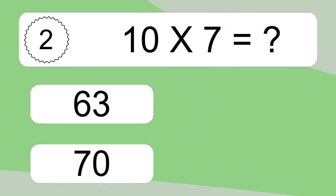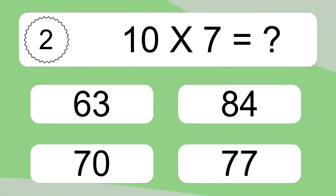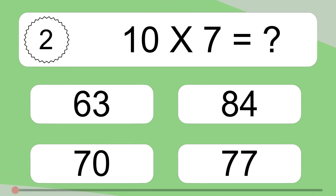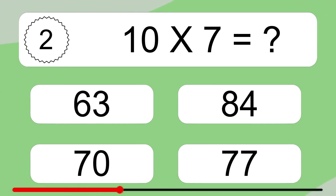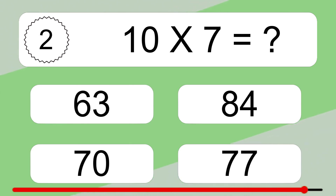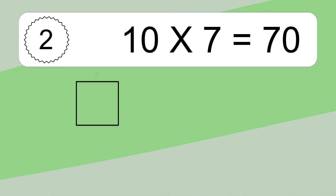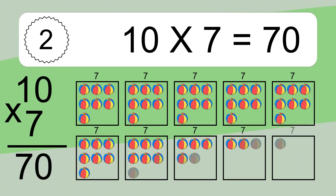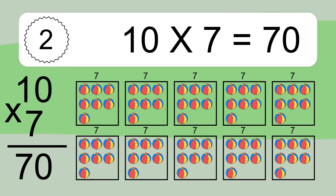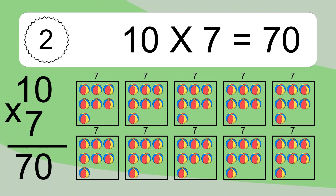Ten times seven equals what? Ten times seven equals 70. We have ten boxes, and each box has seven colorful balls inside. If you count all the balls in all the boxes together, you will have ten times seven balls. This equals 70 balls.